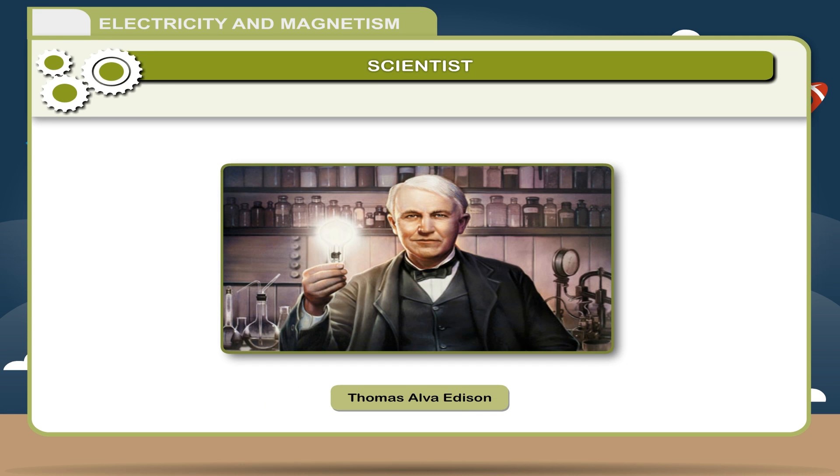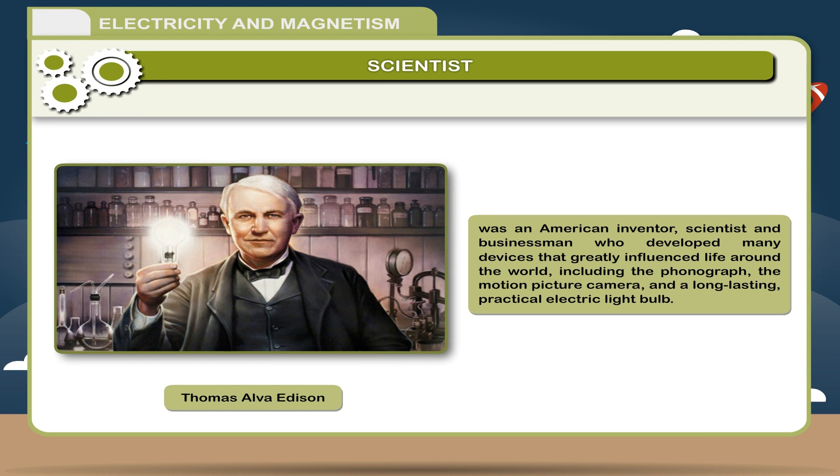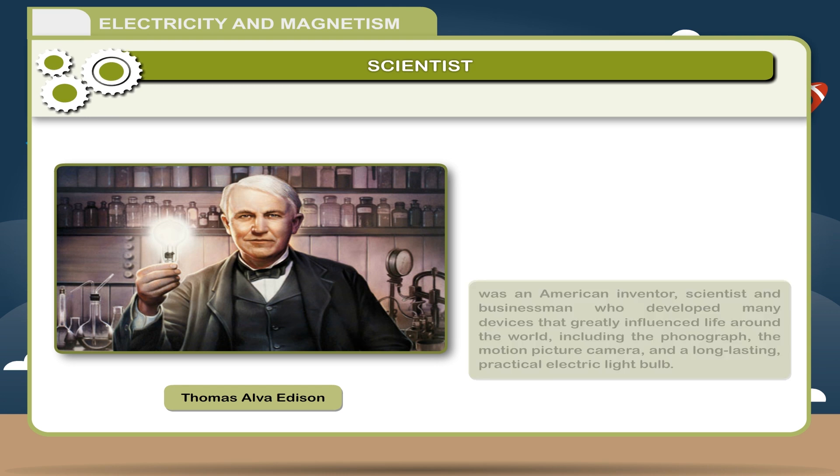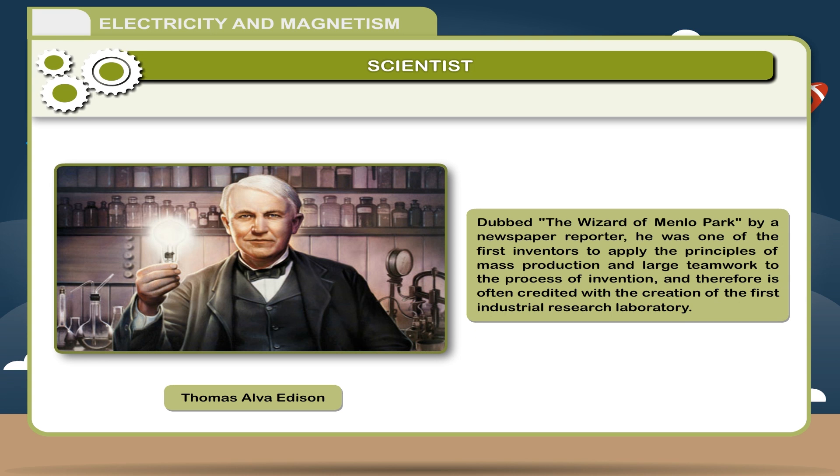Scientist: Thomas Alva Edison was an American inventor, scientist and businessman who developed many devices that greatly influenced life around the world including the phonograph, the motion picture camera and a long-lasting practical electric light bulb. Dubbed the Wizard of Menlo Park by a newspaper reporter, he was one of the first inventors to apply the principles of mass production and large teamwork to the process of invention and therefore is often credited with the creation of the first industrial research laboratory.